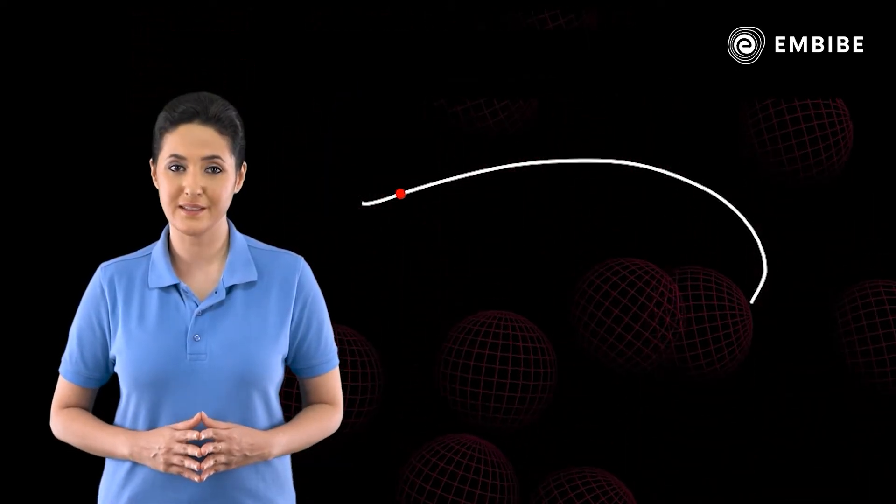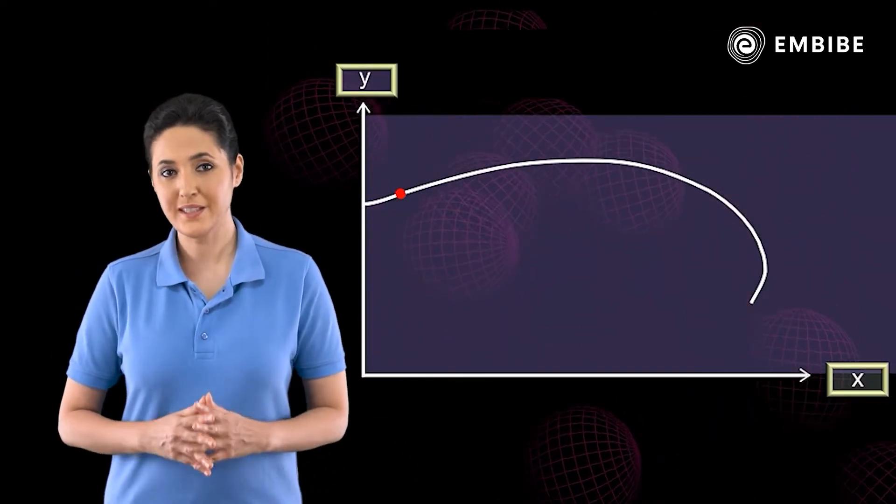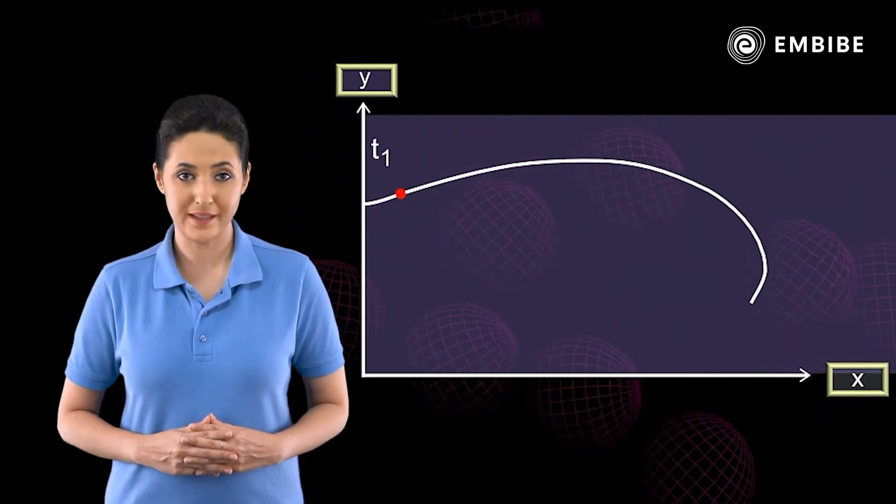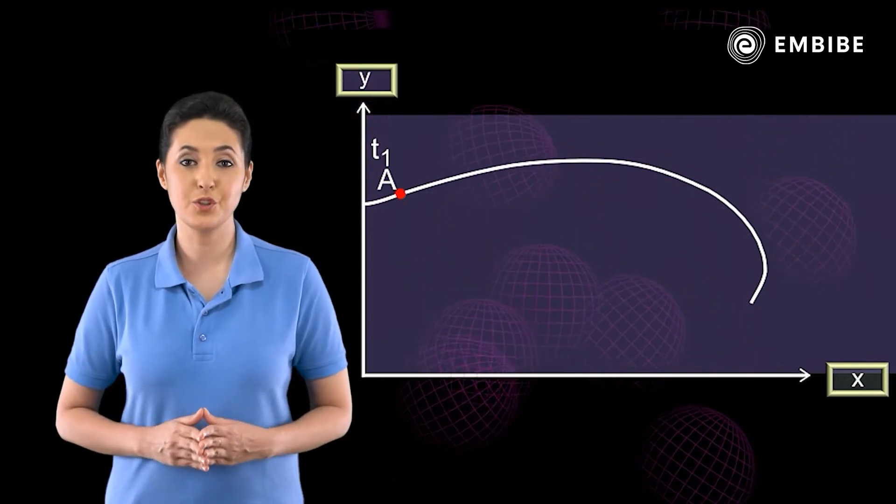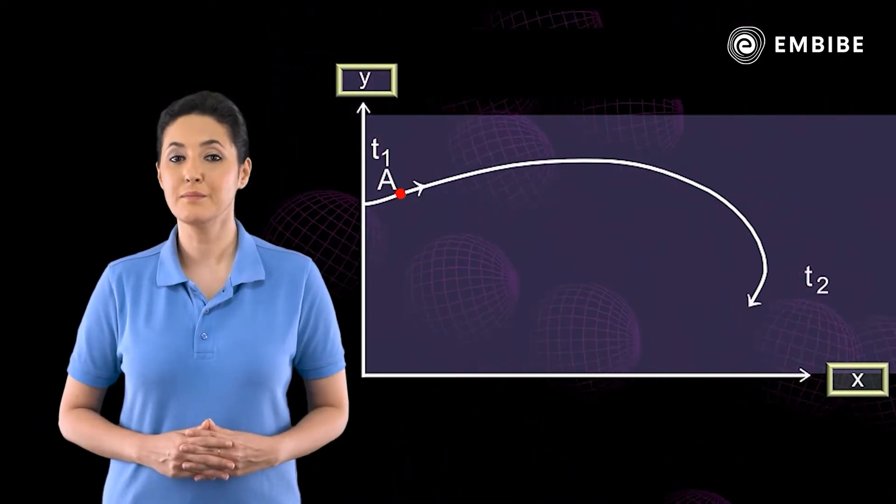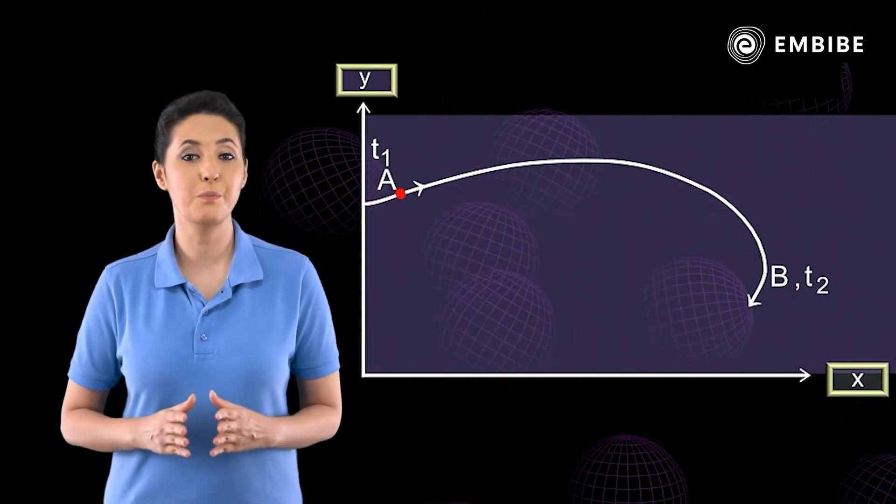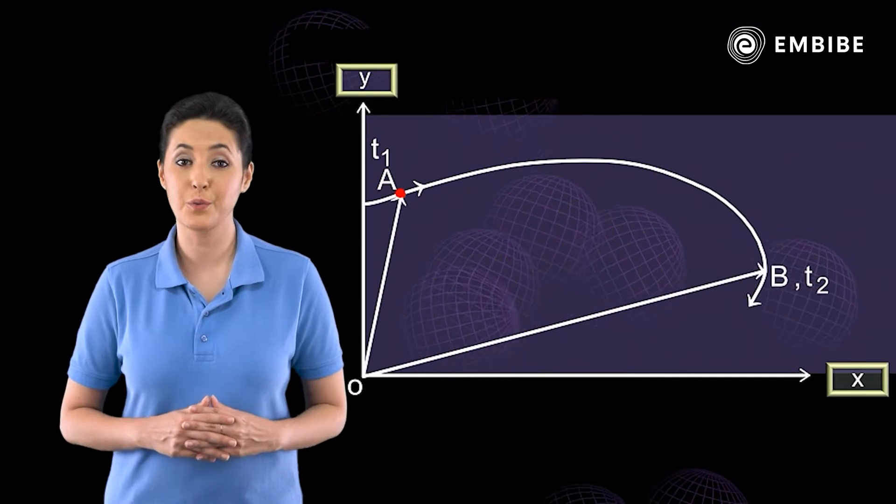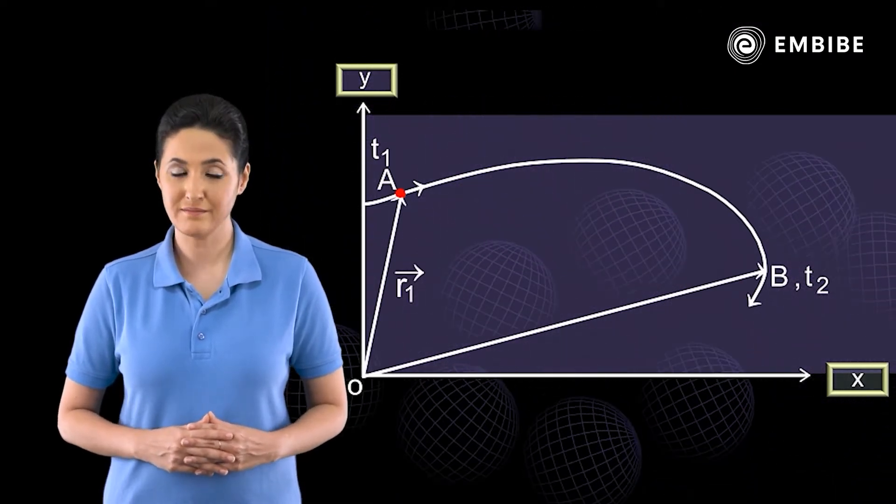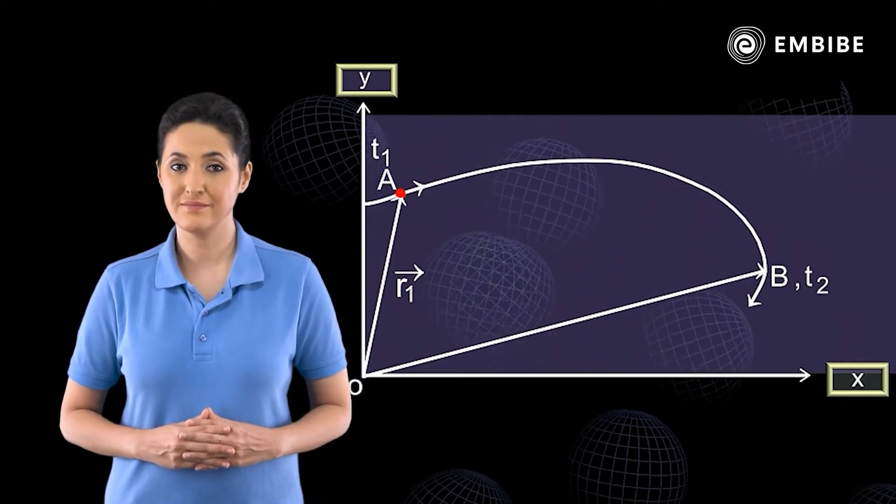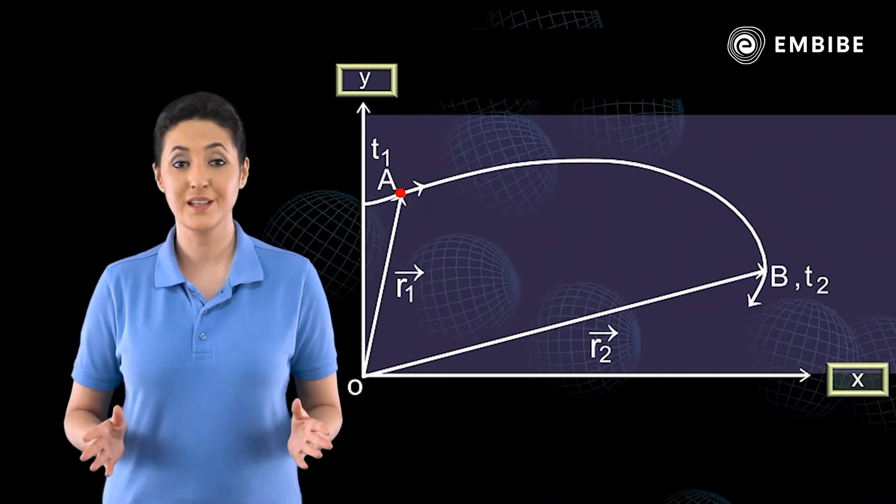The curved path of the motion of a particle in the xy plane is shown. Suppose the particle at the time t1 is at point A and at a later time t2 it is at point B. The position vectors of these two points with reference to the origin of coordinates are vector r1 equals vector OA and vector r2 equals vector OB respectively.